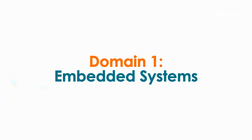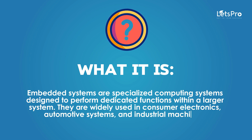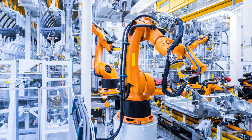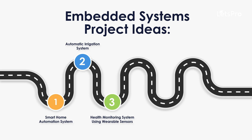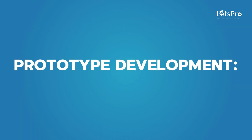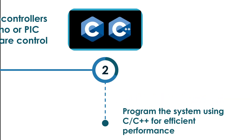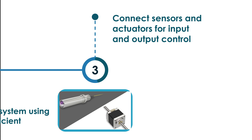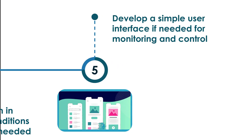Domain 1: Embedded Systems. Embedded systems are specialized computing systems designed to perform dedicated functions within a larger system. They are widely used in consumer electronics, automotive systems, and industrial machinery. Project ideas include: smart home automation system, automatic irrigation system, health monitoring system using various sensors, intelligent traffic light control system, and automated plant watering system. For prototype development, use microcontrollers like Arduino or PIC for hardware control, program using C or C++, connect sensors and actuators, test in real-world conditions, and develop a simple user interface if needed.